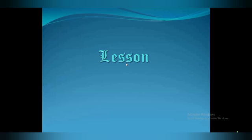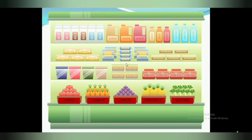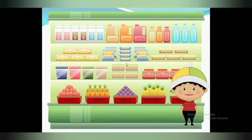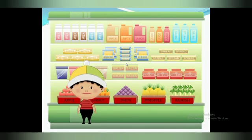Good morning children, today we will start a new lesson in maths — that is fractions. This is a market where you can see varieties of fruits and cold drinks. Tom comes to the market; he's hungry and wants to buy something for himself, but he doesn't have enough money. He is able to buy only one apple.